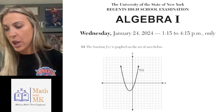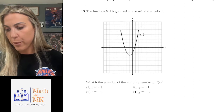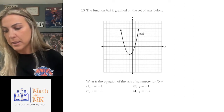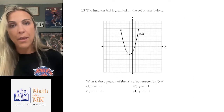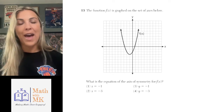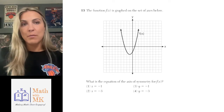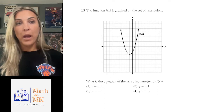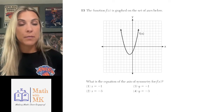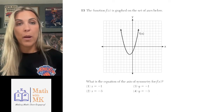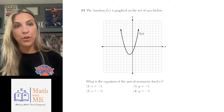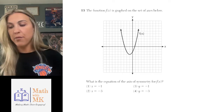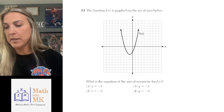Number 13 starts us off with a parabola. The function f of x is graphed on the set of axes below, and they want to know what is the equation for the axis of symmetry of f of x. So this is really a vocabulary thing — do you know what the axis of symmetry is for a parabola? The axis of symmetry is a vertical line that passes through the vertex of the parabola and splits it in half.